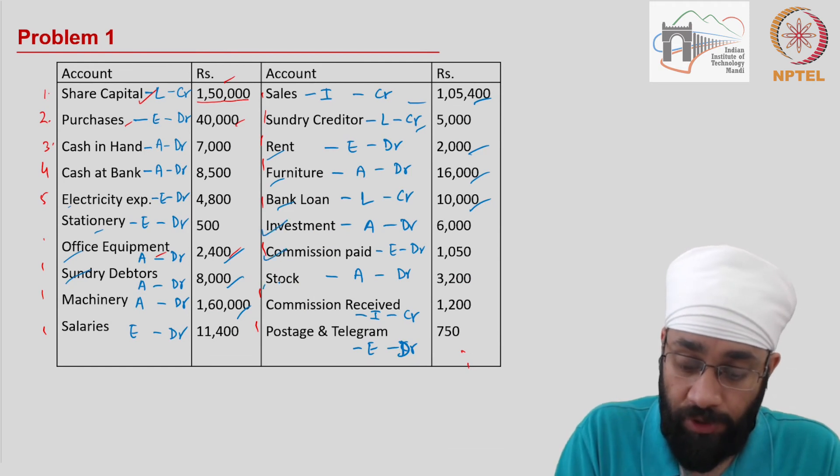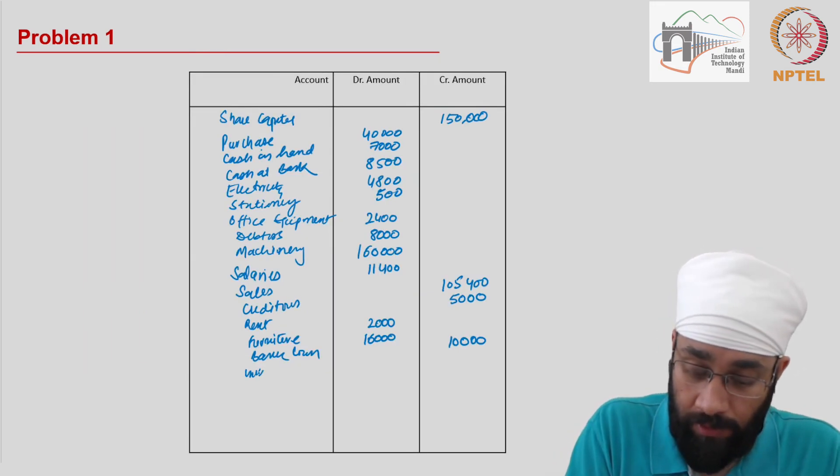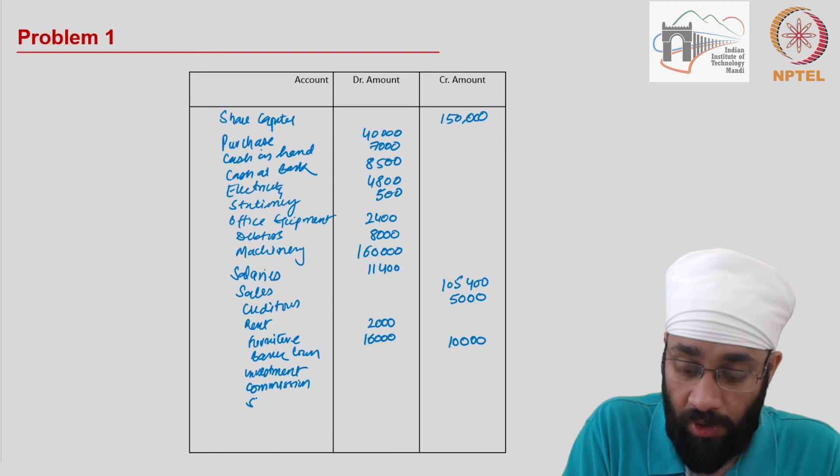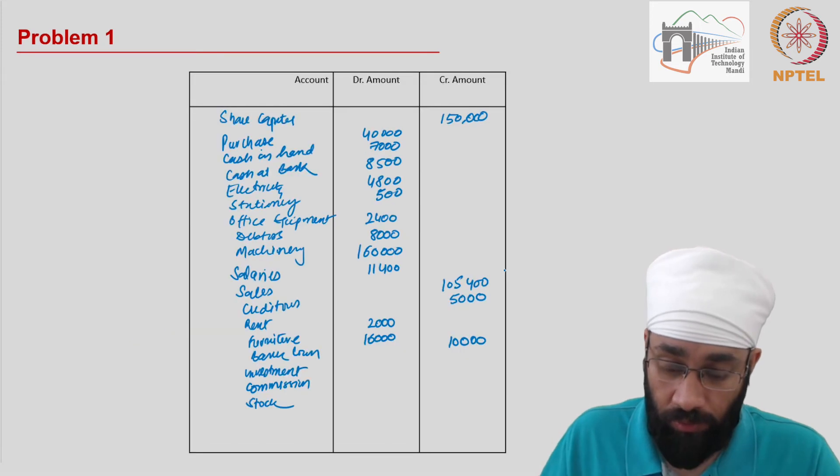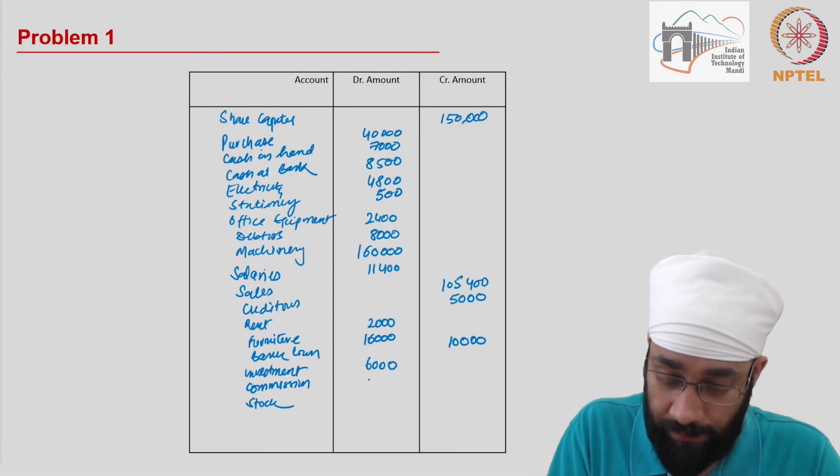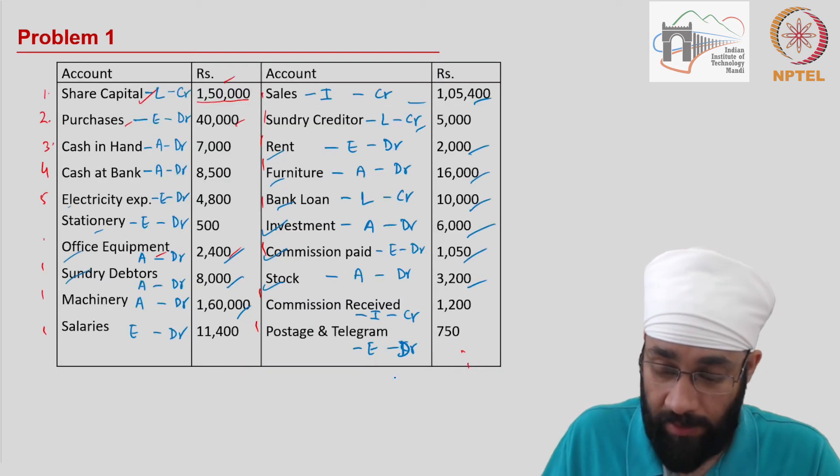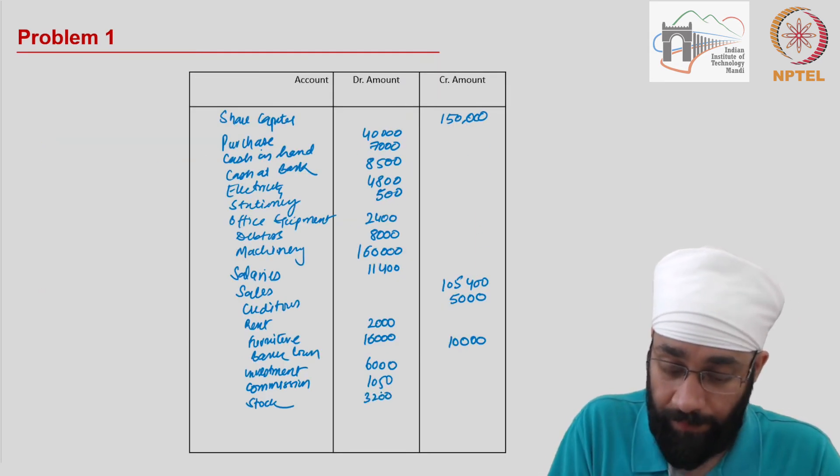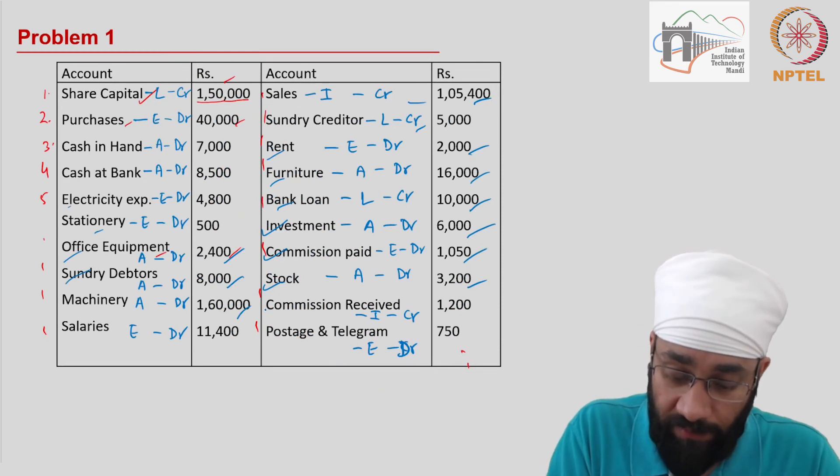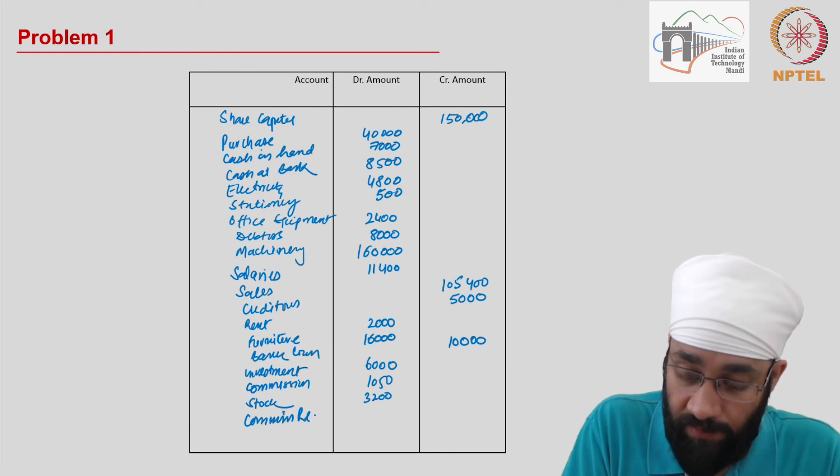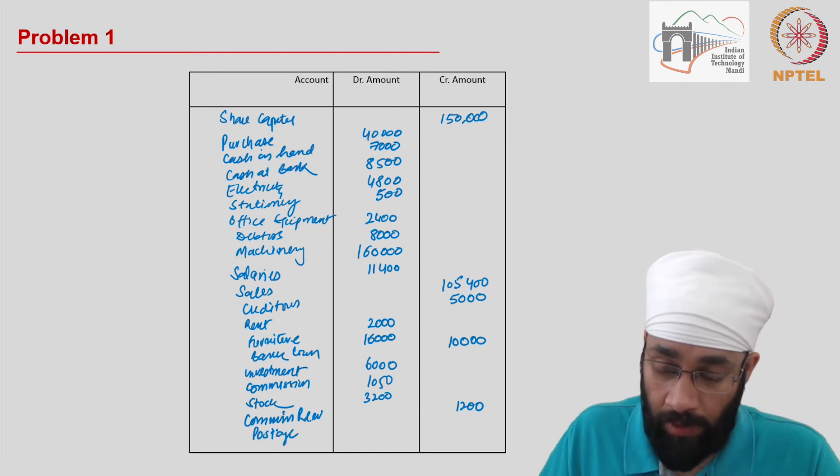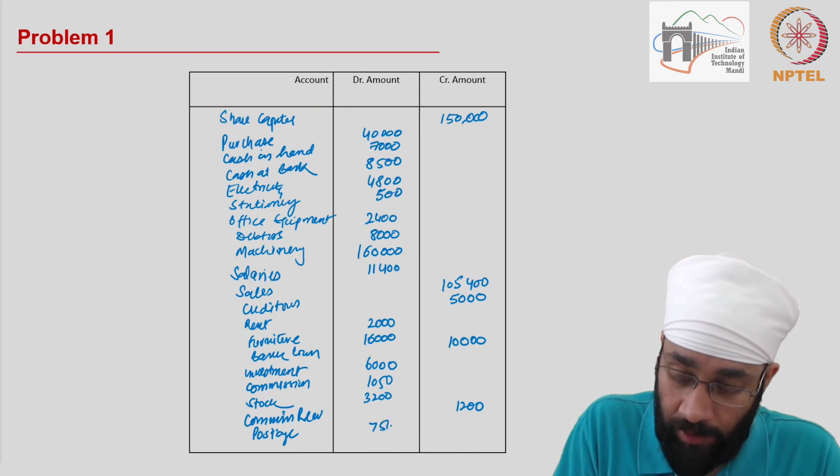Then you have investment, commission and stock. Investment is $6,000, commission $1,050, stock $32,000, all debit balances. And then you have commission received $1,200 as income and postage $750 as debit. There you go.